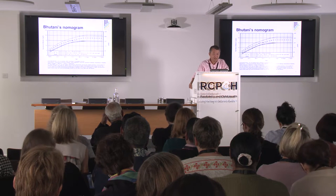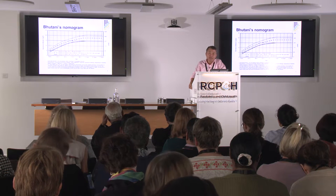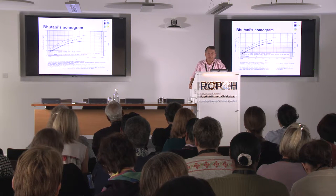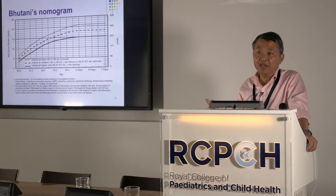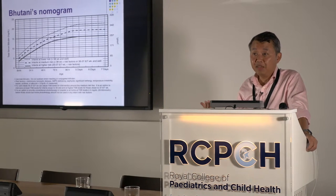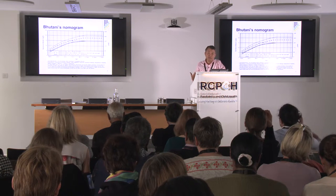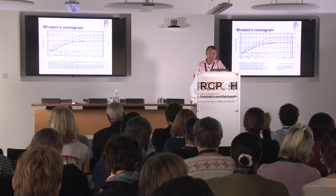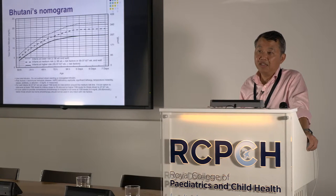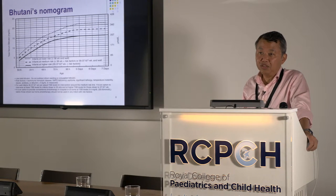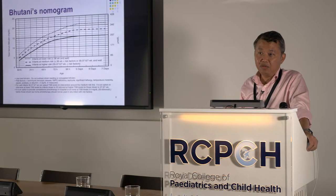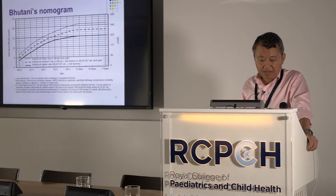I always tell my trainees: if a baby comes to me with symptomatic hypoglycaemia or symptomatic polycythaemia, our job as neonatologists is to identify the high-risk babies and prevent them from becoming symptomatic — because when a baby develops seizures due to hypoglycaemia or polycythaemia, it may already be too late. The same applies to jaundice: understanding the mechanism and preventing neurotoxicity is the important goal.